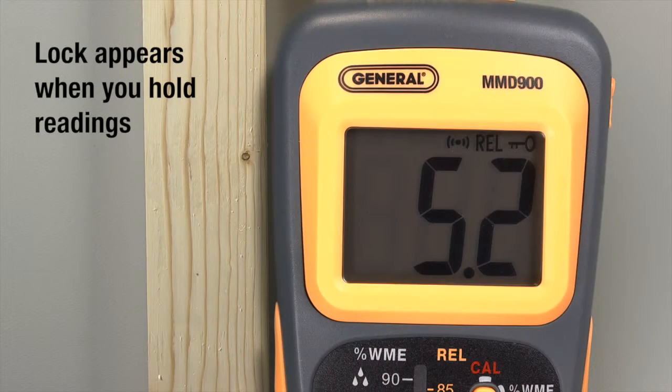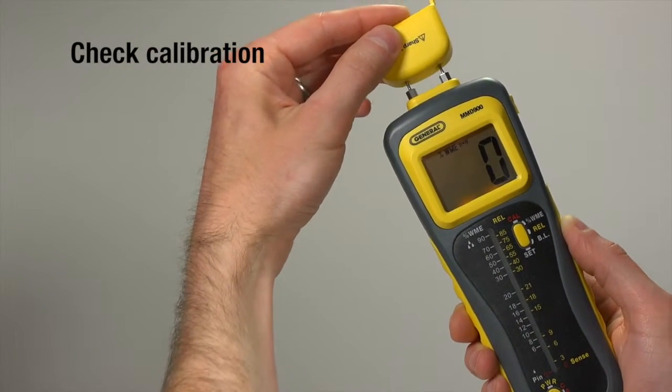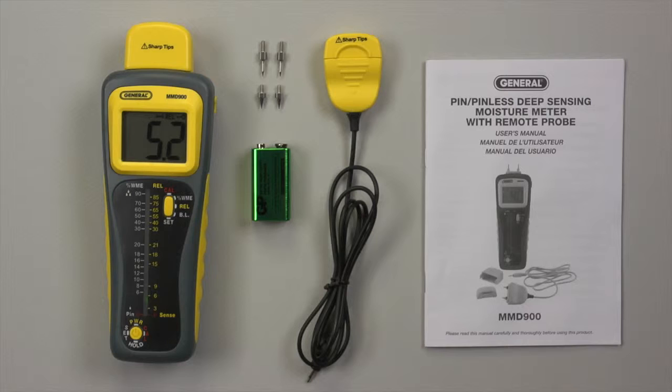Press power briefly to hold a reading. Press again to release. The device also offers manual or automatic calibration checking. MMD 900 Pin Pinless Deep Sensing Moisture Meter with Remote Probe.